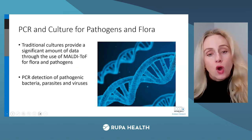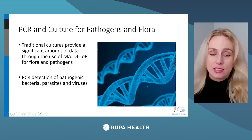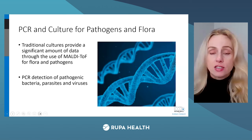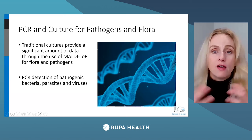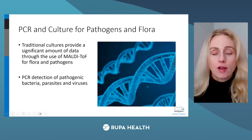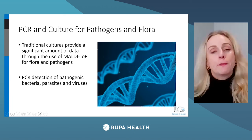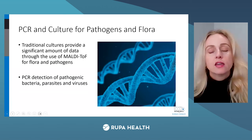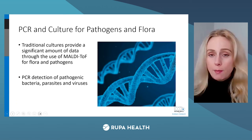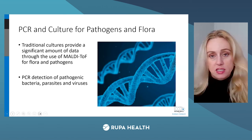GI 360 includes both PCR and culture — that's important because you want both pieces of information. With PCR data, that's very important to understand a profile of the microbiome. PCR is the best way to identify a pathogen. If you're looking for a virus, you want PCR because you can't culture it. If you're looking for parasites or bacteria associated with gastroenteritis, you want PCR — you want that very sensitive and specific marker.